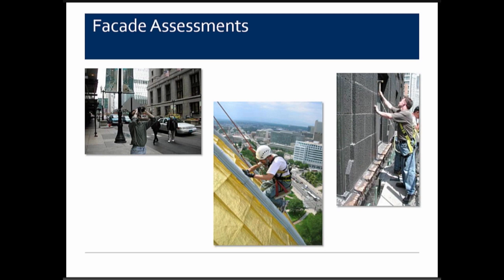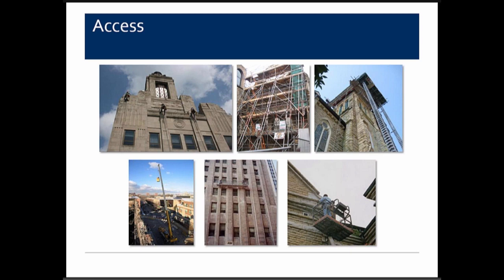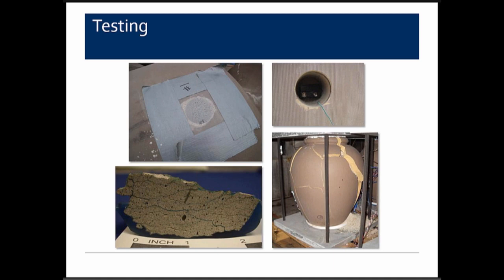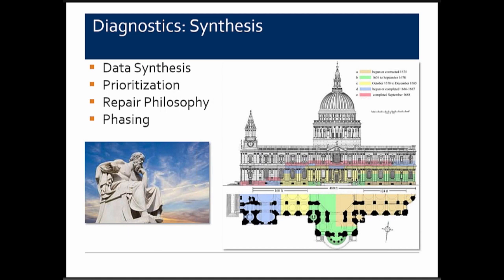Examples of assessment include visual inspection, rope access, and hands-on inspections at closer levels. One of the most important aspects of terracotta evaluations is inspection openings — looking at what's occurring behind the material itself. We've had limited success using borescopes; there are some tricky issues with terracotta that must be considered. Both field and laboratory testing can also be performed.